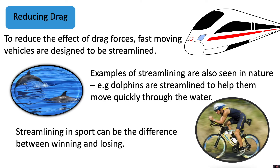Streamlining in sport can be the difference between winning and losing. When designing equipment for sport, for example the helmet on a cyclist or the bike itself, these are often tested in air tunnels to see which designs are best at reducing drag, because this means the cyclist can go faster. They might also bring the cyclist into the air tunnel to see which riding position is best at reducing drag.